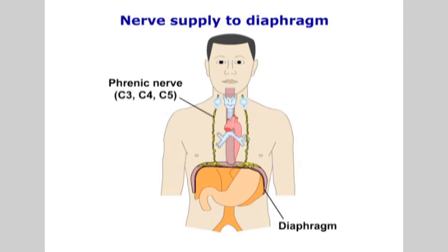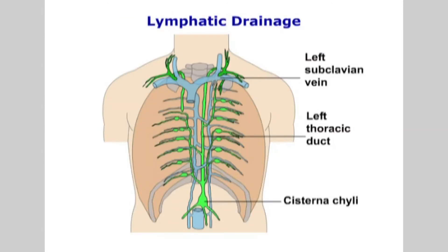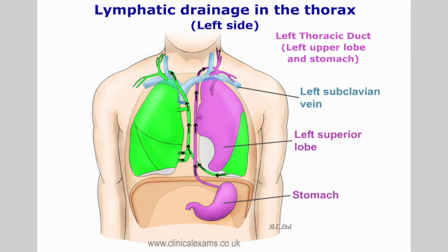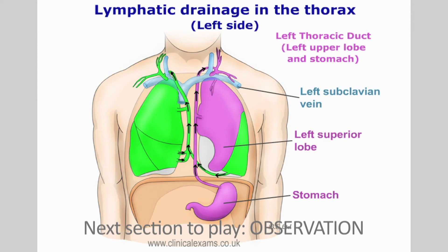Lymphatic drainage is divided into superficial and deep plexi. They empty into the bronchopulmonary lymph nodes next to the bifurcation of the trachea, then into the bronchomediastinal lymph trunks. The right lung and left lower lobe drain into the right supraclavicular fossa, while the left upper lobe and the stomach drain into the left supraclavicular fossa.